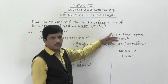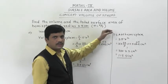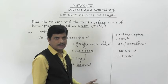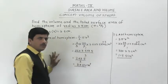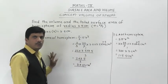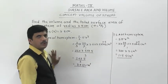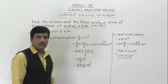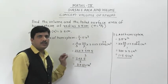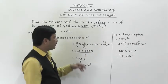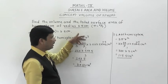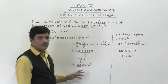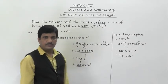We directly applied the formula and put in the values to get the answer. This is a very simple question — such questions can come for two marks, one mark each for volume and surface area. The radius was directly given, so we just substituted values.